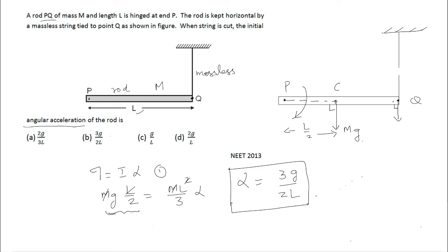Any option given like that? Yes, 3G by 2L. This is the correct answer — option B is the correct answer. This question came in NEET 2013.